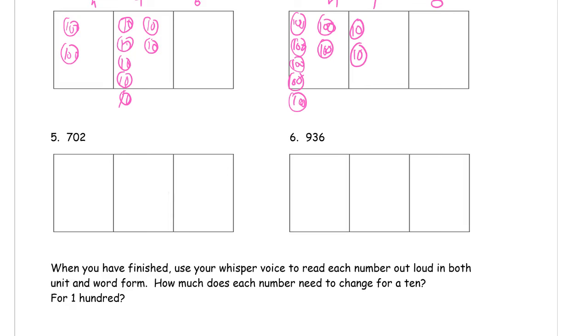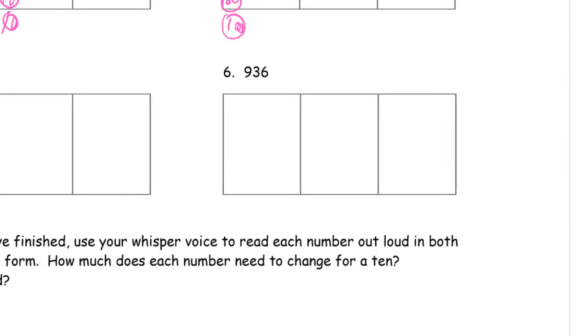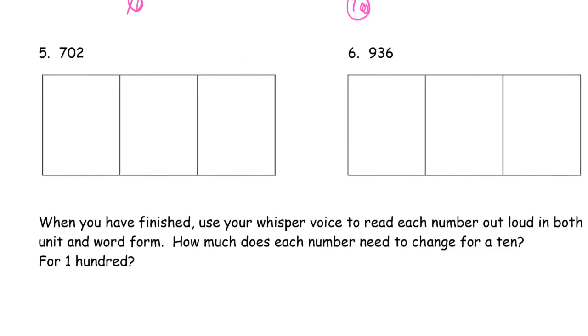702, let me zoom in on this one. This is HTO, I need seven hundreds, zero tens, two ones. There's my seven hundreds, one, two, three, four, five, six, seven, zero tens, and I still need two ones.